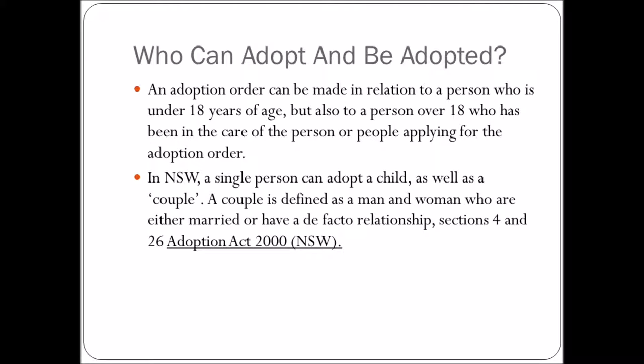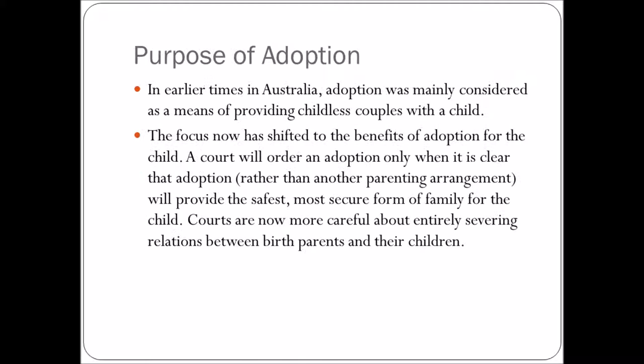In New South Wales, a single person can adopt a child, as well as a couple. A couple is defined as a man and woman who are either married or in a de facto relationship under sections 4 and 26 of the Adoption Act 2000. More recently, same-sex couples have also been allowed to adopt. In earlier times in Australia, adoption was mainly considered a means of providing childless couples with a child, but the focus has now shifted to the benefits of adoption for the child — the best interest of the child. A court will order an adoption only when it is clear that adoption will provide the safest, most secure form of family for the child.